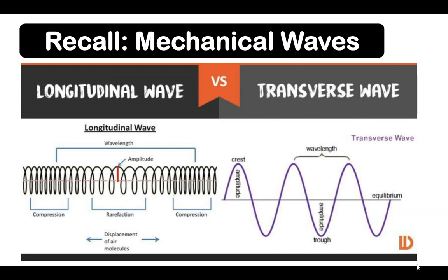The other type of mechanical wave is a transverse wave. A transverse wave is a moving wave whose oscillations are perpendicular to the direction of the wave or path of propagation. An example is given by waves that can be created on a horizontal length of string by anchoring one end and moving the other end up and down.